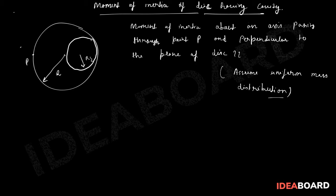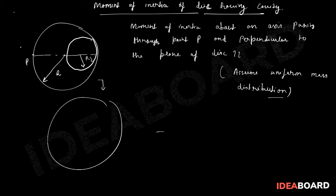The question is how to proceed in such questions. I will tell you the standard approach. Basically, you can assume this system like there is a big disc minus a small disc. As mass is uniform, I can assume this is sigma mass density, and obviously the small disc will also consist of sigma mass density only. So this is the approach.